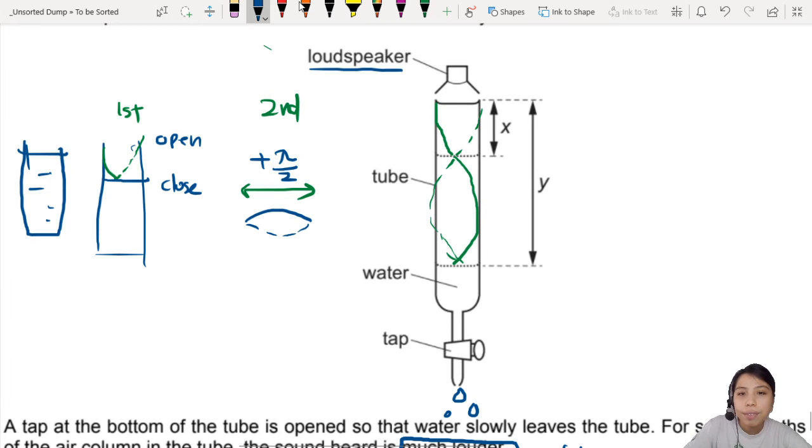Now you have a node, node, anti-node, and anti-node. That's what we call it. So how do we write out this thing? How do you find the wavelength? This will be the key right here. Between the first and the second, there will be half a wavelength difference.